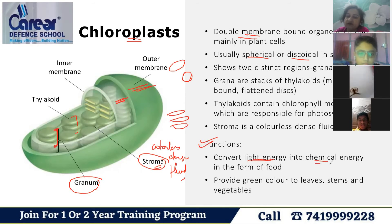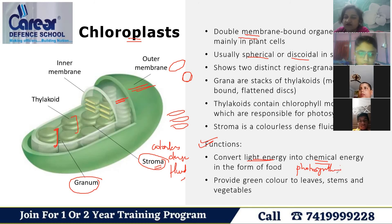The function of chloroplasts is that chlorophyll converts light energy into chemical energy in the process of photosynthesis. Another function is that chloroplasts give the green color to leaves, stems, and vegetables.